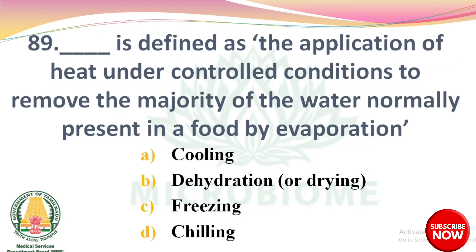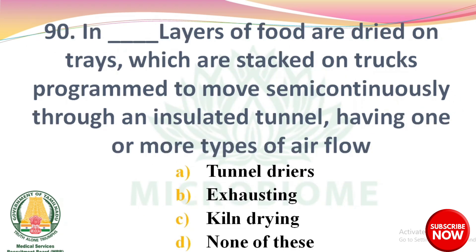Next question: dash is defined as the application of heat under controlled conditions to remove the majority of water normally present in a food by evaporation. Options: cooling, dehydration, freezing, chilling. The right answer is Option B: dehydration. Next question: in dash, layers of food are dried on trays which are stacked on trucks programmed to move semi-continuously through an insulated tunnel having one or more types of air flow. Options: tunnel driers, exhausting, kiln drying, none of these. The right answer is Option A: tunnel driers.